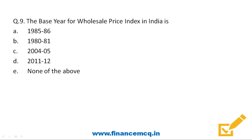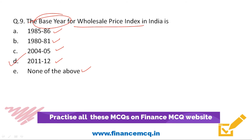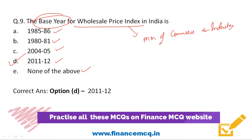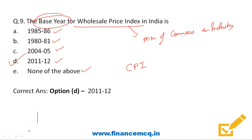Next question: the base year for Wholesale Price Index in India is — 1985-86, 1980-81, 2004-05, or 2011-12? The correct answer is option D: 2011-12. Wholesale Price Index measures changes in the price of goods sold between businesses and is published by the Ministry of Commerce and Industry. Consumer Price Index measures the prices of goods and services purchased by consumers, and is calculated by the National Statistical Office under the Ministry of Statistics and Programme Implementation.